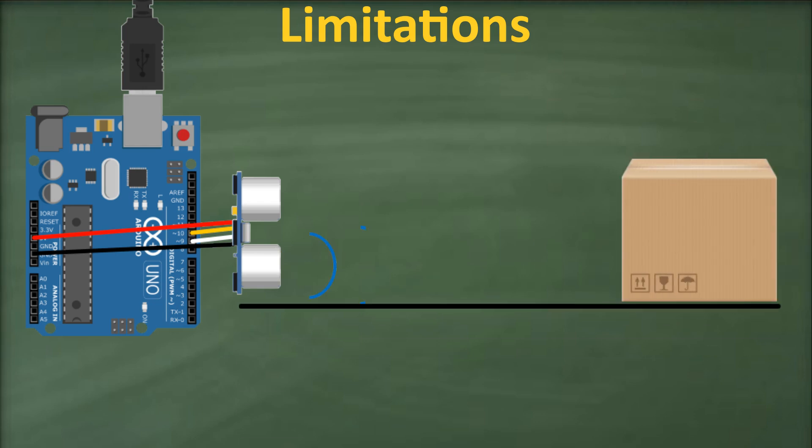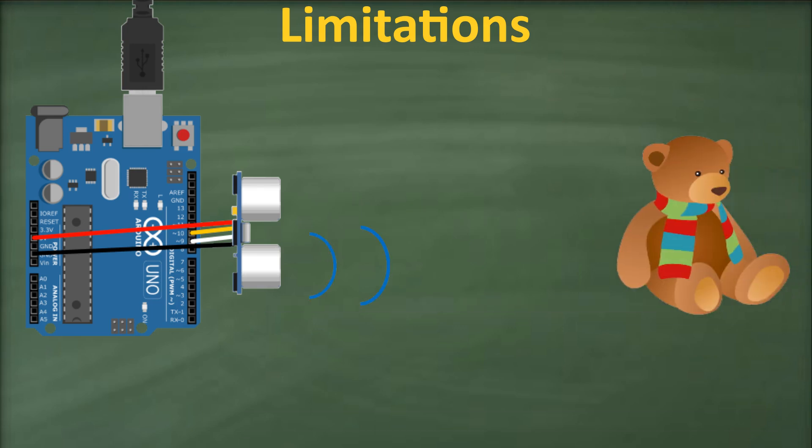Additionally, if the sensor is mounted low, sound may reflect off the floor. Soft, irregular surfaces, like stuffed animals, that absorb sound rather than reflect it can also be problematic.